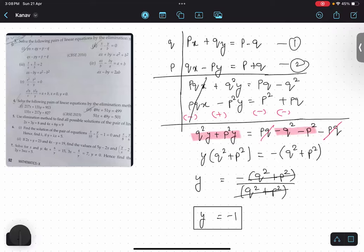I can substitute in first equation also. Substituting, this is third. Three and one. px plus q bracket minus 1 equals to p minus q. Clear?